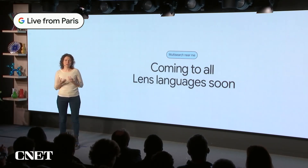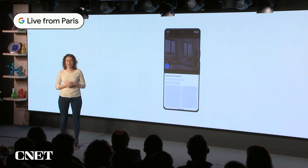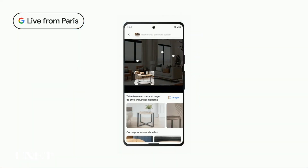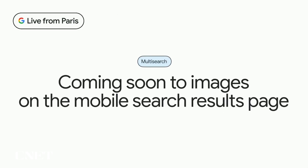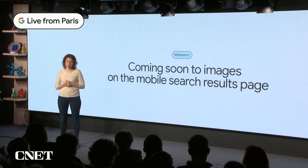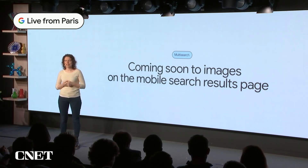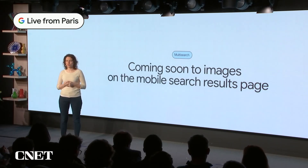There are also times when you're already searching and you find something that just catches your eye and inspires you. So in the next few months, you'll be able to use multi-search globally for any image you see on the search results page on mobile. Once you start using multi-search, it's striking how natural it feels to be able to use multiple senses to search.